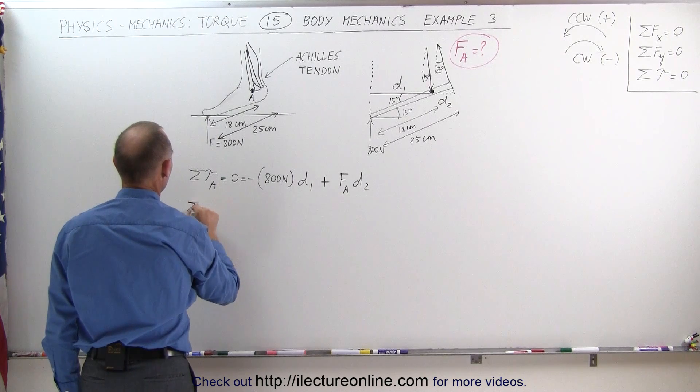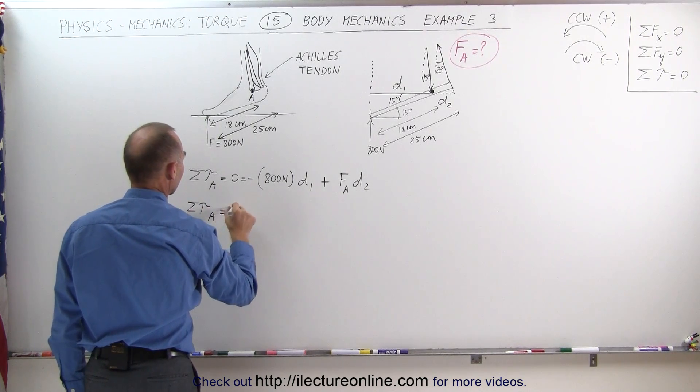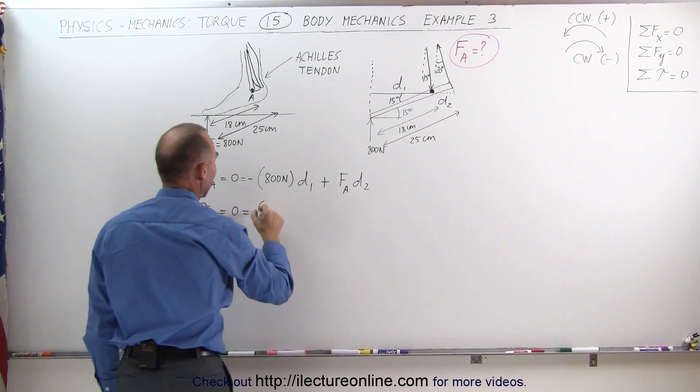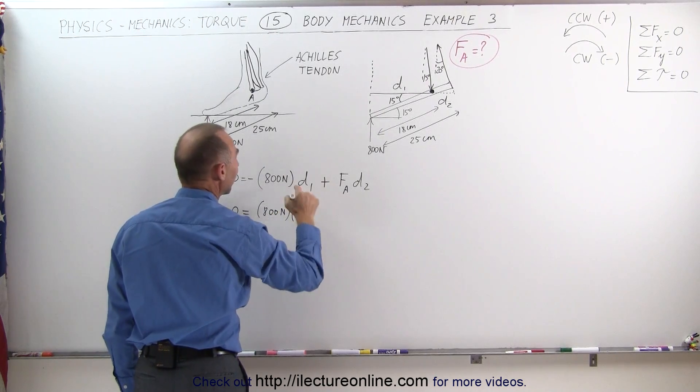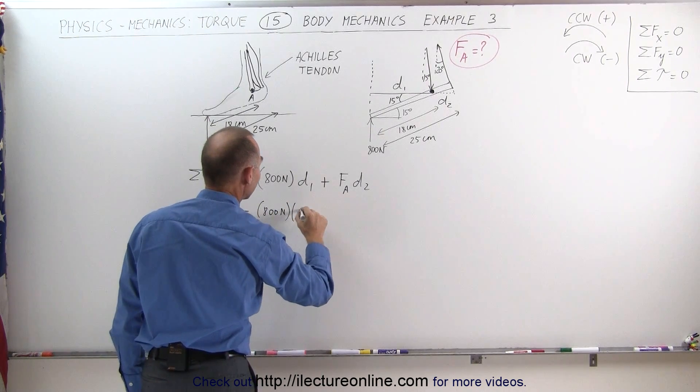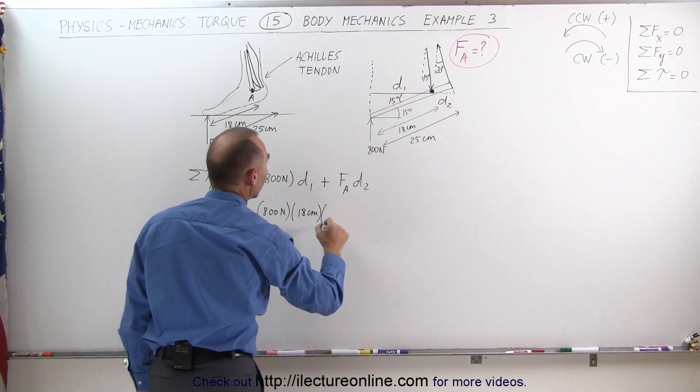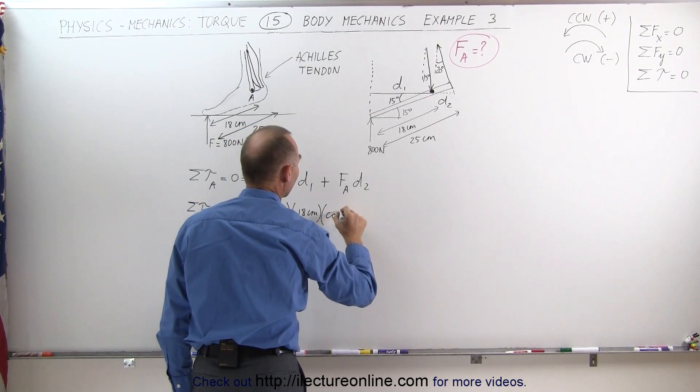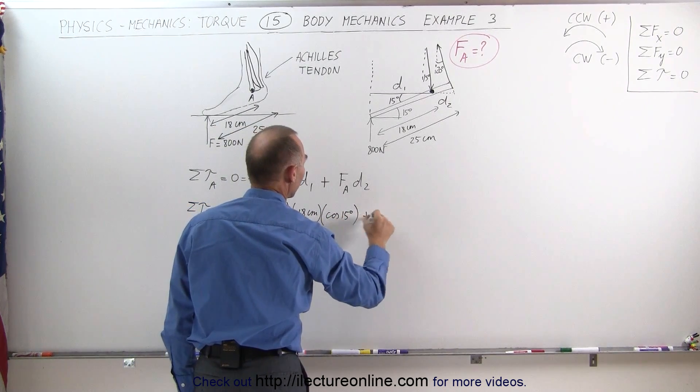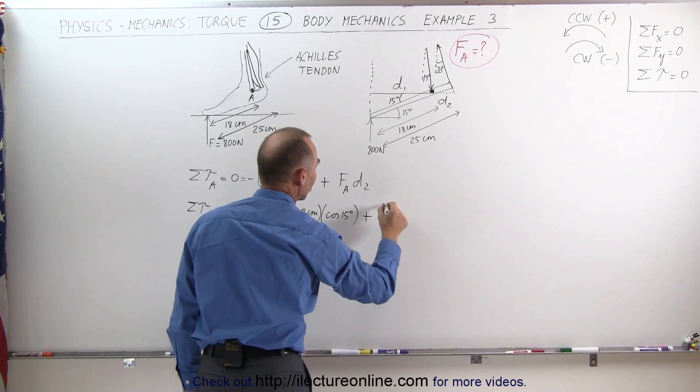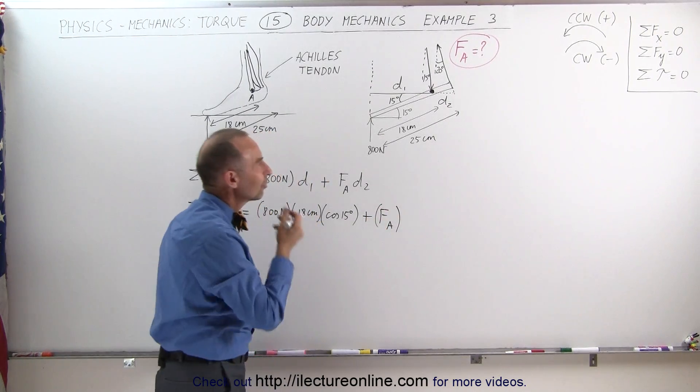The sum of the torques about point A is equal to zero which is equal to minus 800 newtons times distance one which is 18 centimeters times the cosine of 15 degrees plus the force caused by the Achilles tendon times distance two.